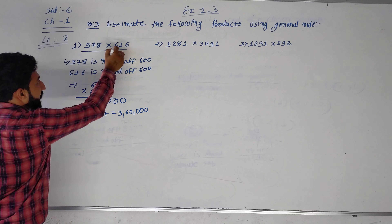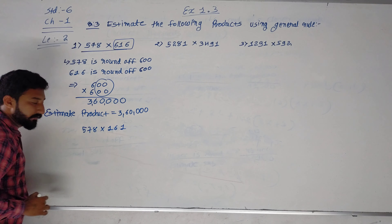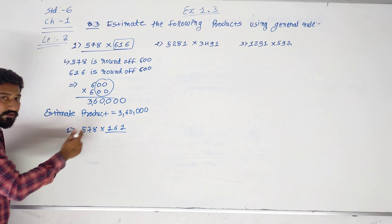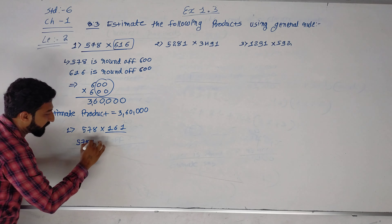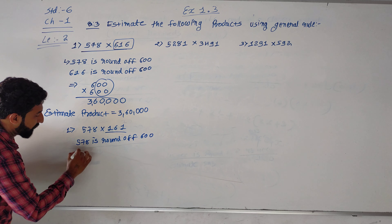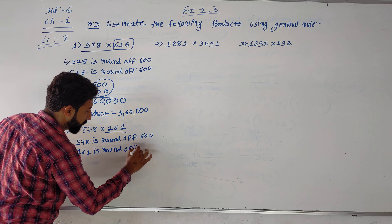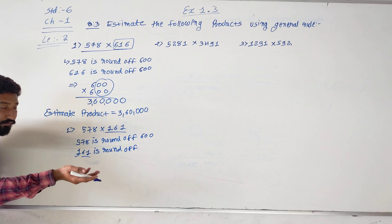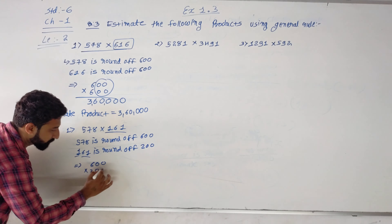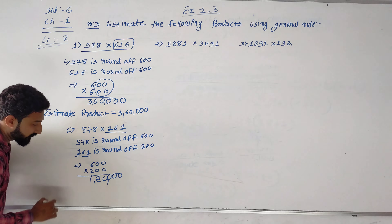So students, in some books here it is written as 578 multiplied by 161, and they show the same method. 518 round of — 610, 161 round of — 161 is nearest to 200, so it becomes 200. Then multiplication: 1, 2, 3, 0 as it is — 6 times 12 — it becomes 1,20,000 product.